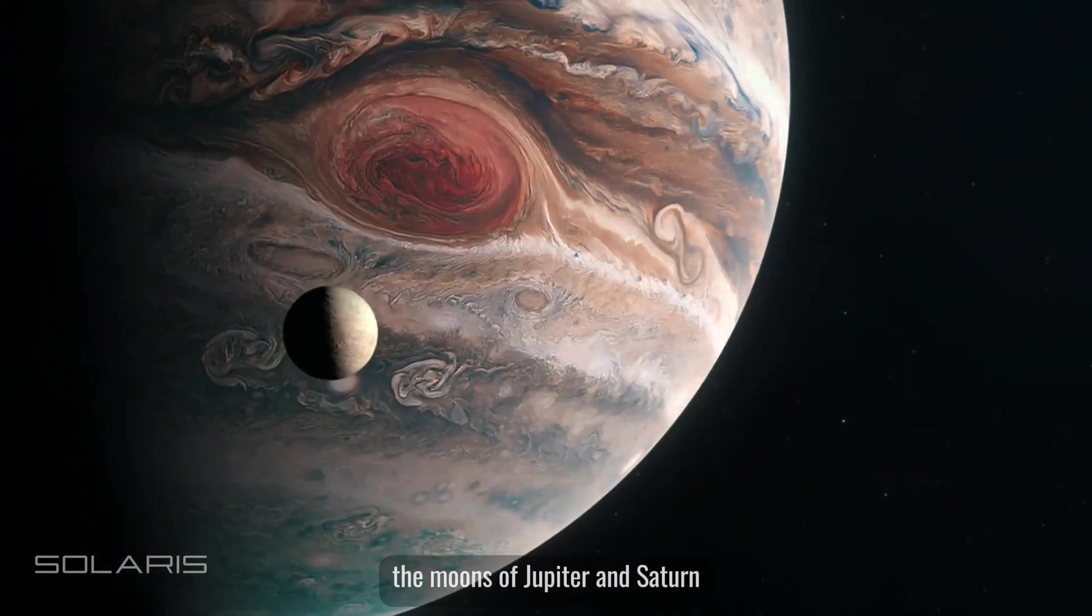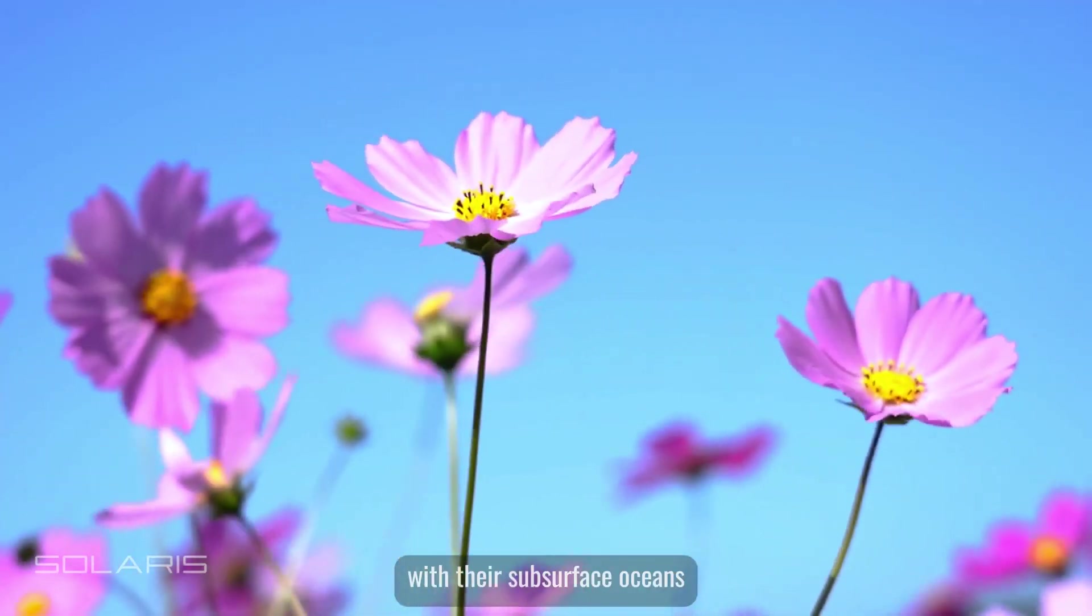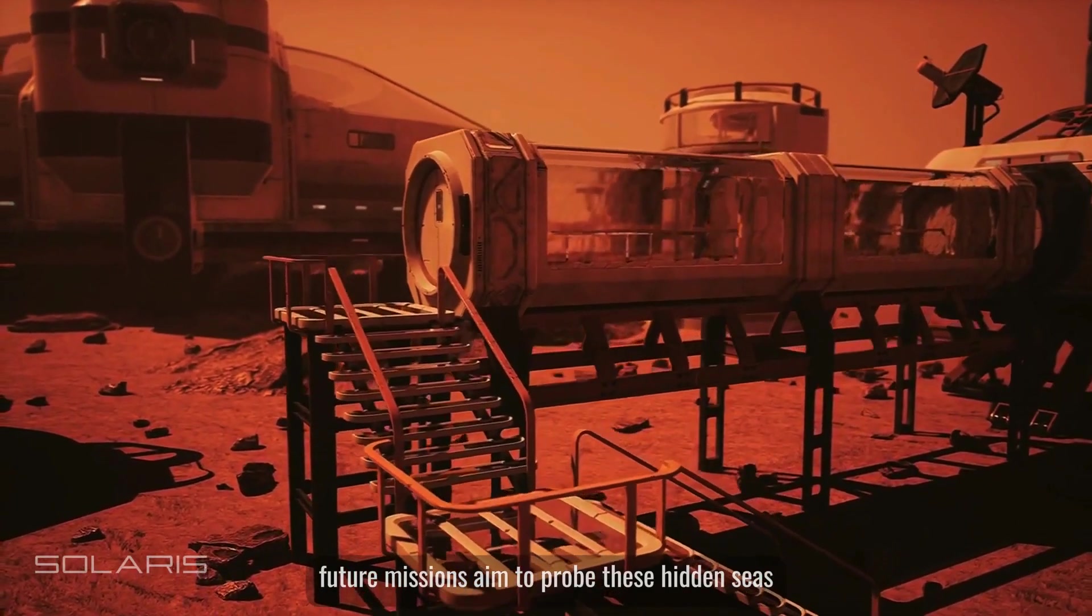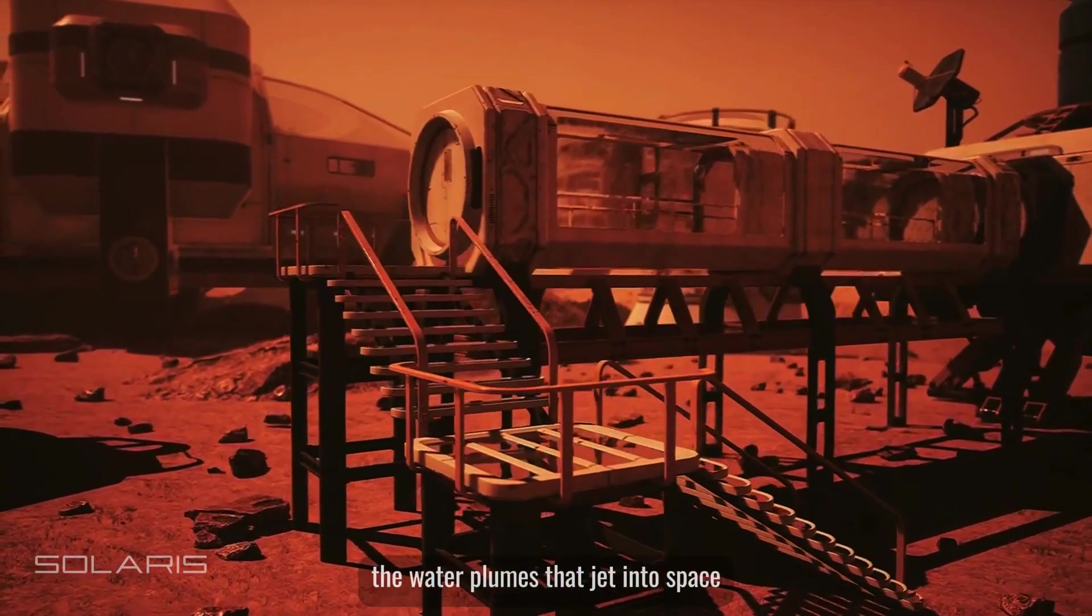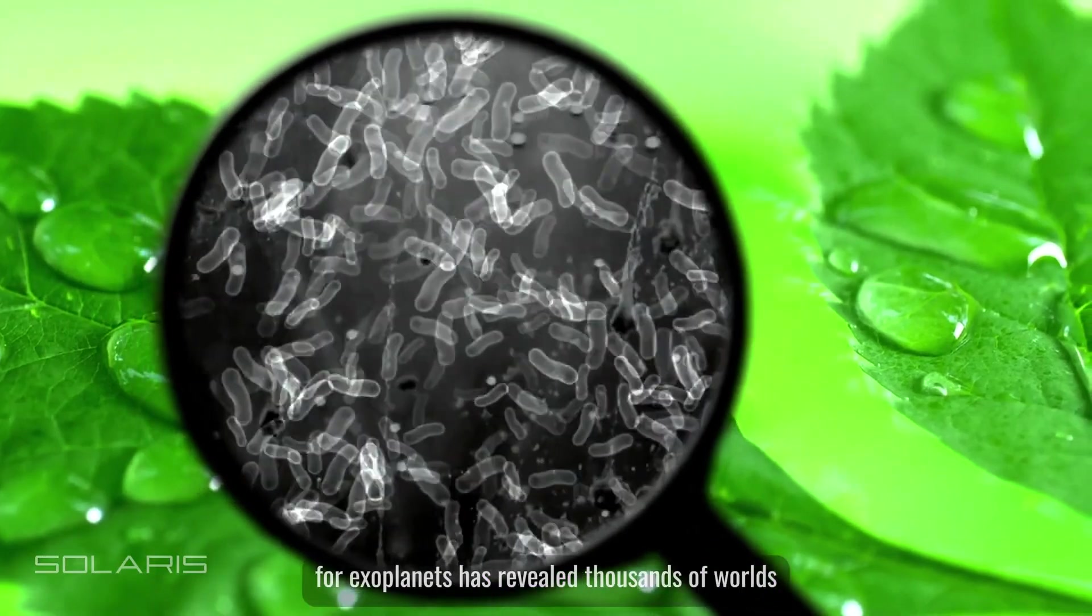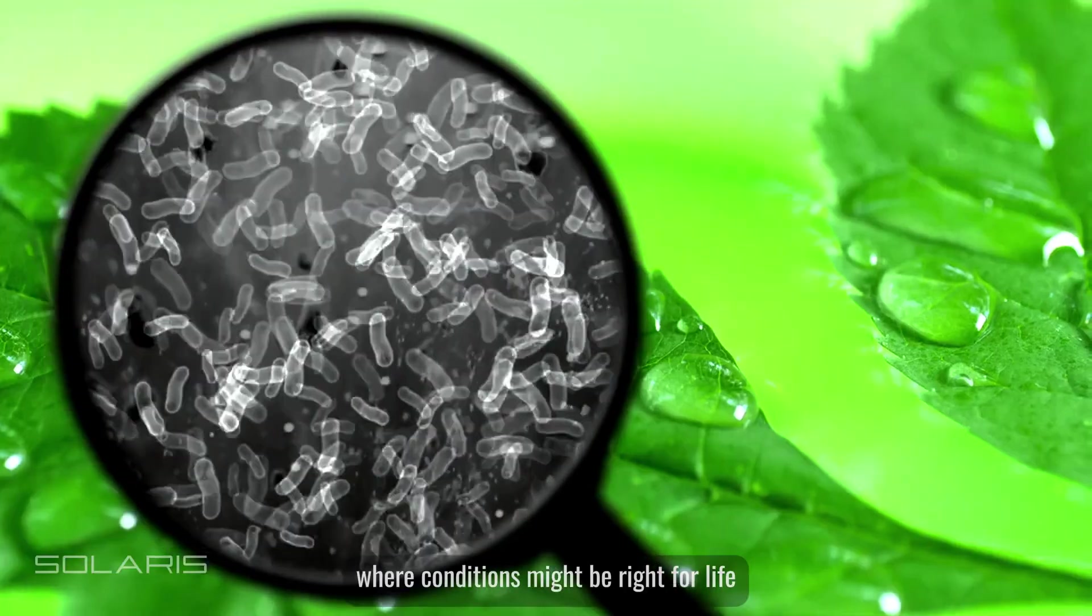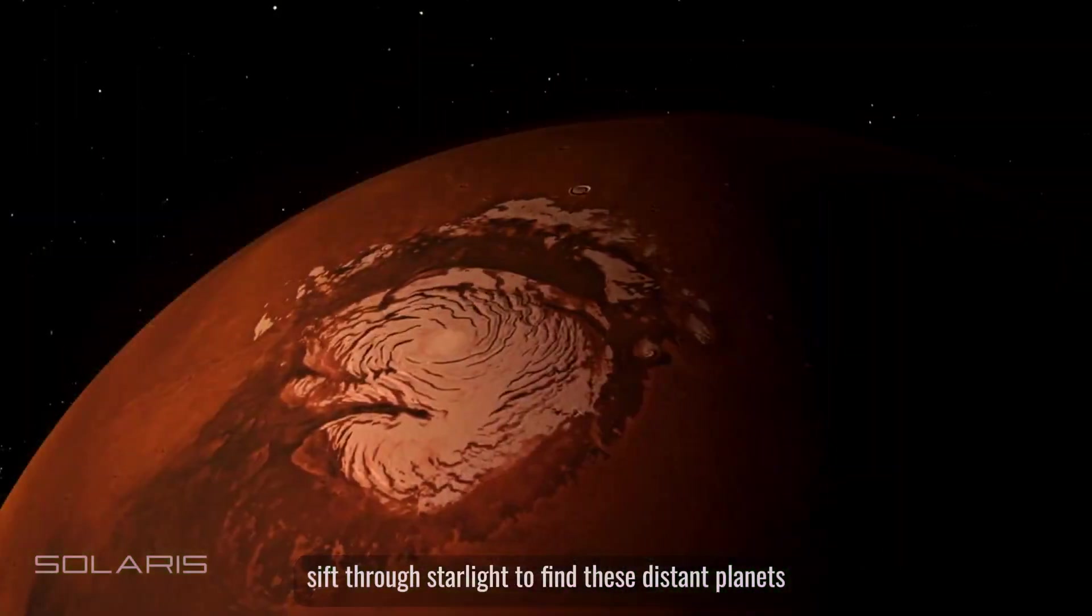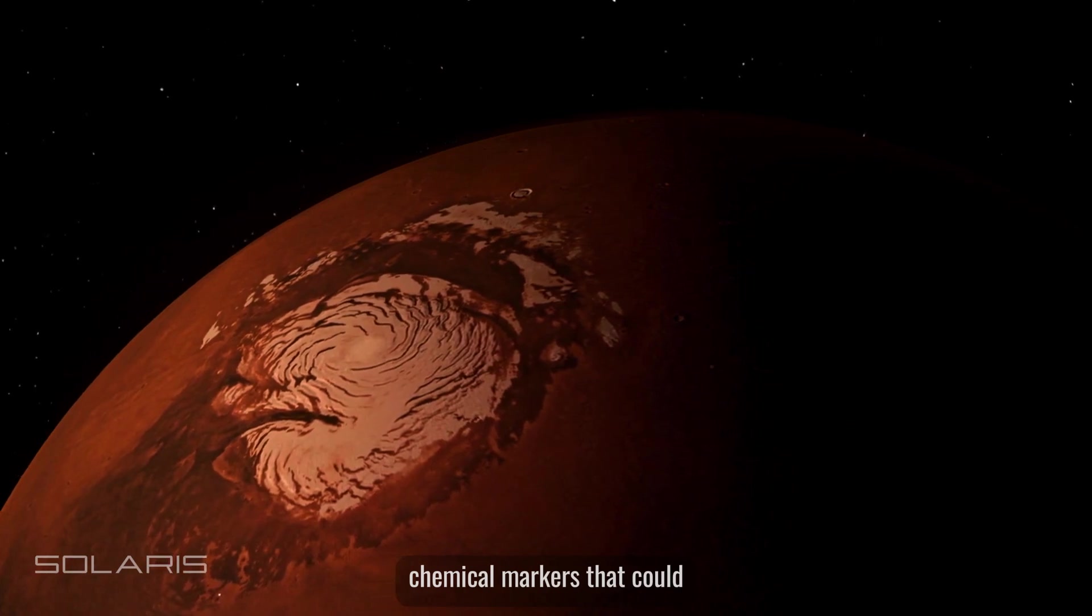Beyond our solar system, the hunt for exoplanets has revealed thousands of worlds, some lying within their star's habitable zone, where conditions might be right for life. Advanced telescopes, both in space and on Earth, sift through starlight to find these distant planets, analyzing their atmospheres for signs of biosignatures, chemical markers that could indicate the presence of life.